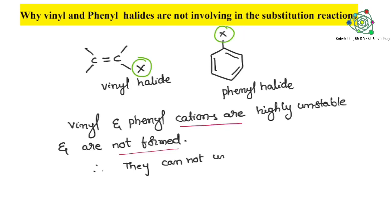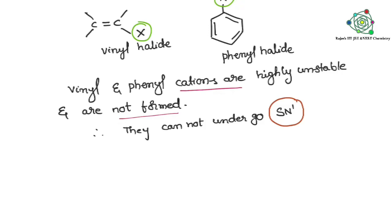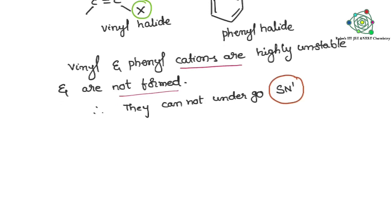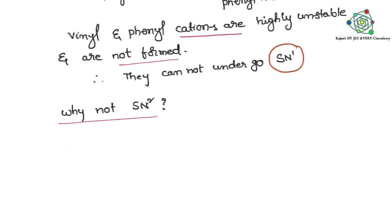So simply I am writing conclusion: they cannot undergo SN1 reaction because cations are highly unstable and they are not forming cations. That's why SN1 is not possible. SN1 is not possible. Why not SN2? Why not SN2? Why these are not involving in the SN2 reaction?